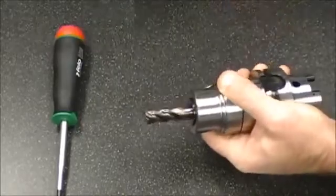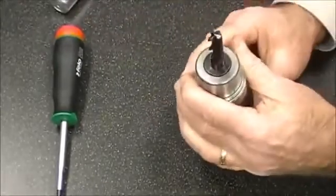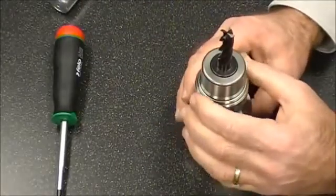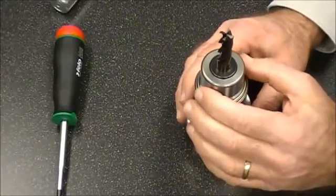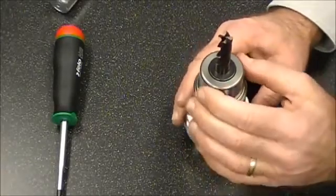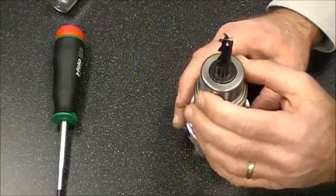Okay, that's tight, that's 12 newton meters, and that end mill cannot pull out of this tool holder. You can take extremely aggressive cuts with the confidence the end mill cannot pull out.